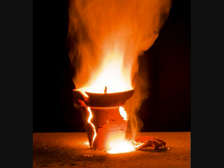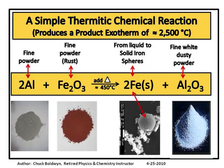One example is thermite. In thermite, aluminum is oxidized into aluminum oxide, whereas the iron oxide is reduced, and you get pure iron metal out of it.